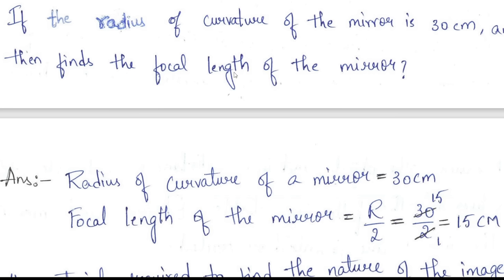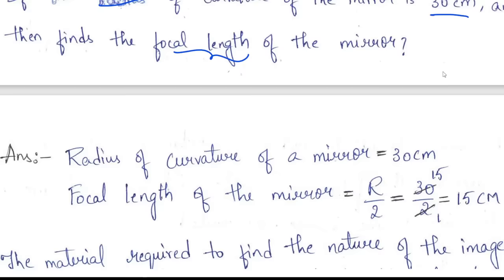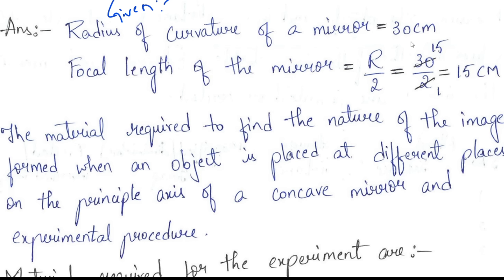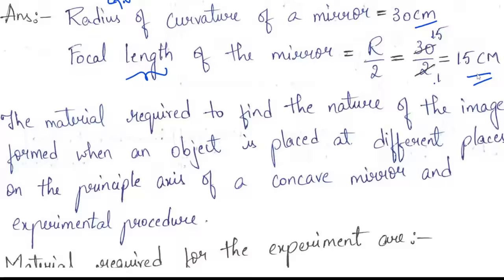Sample problem: If the radius of curvature of the mirror is 30 cm, find the focal length. Given: radius R = 30 cm. Using the formula, focal length f = R/2 = 30/2 = 15 cm. So the focal length of the mirror is 15 cm.